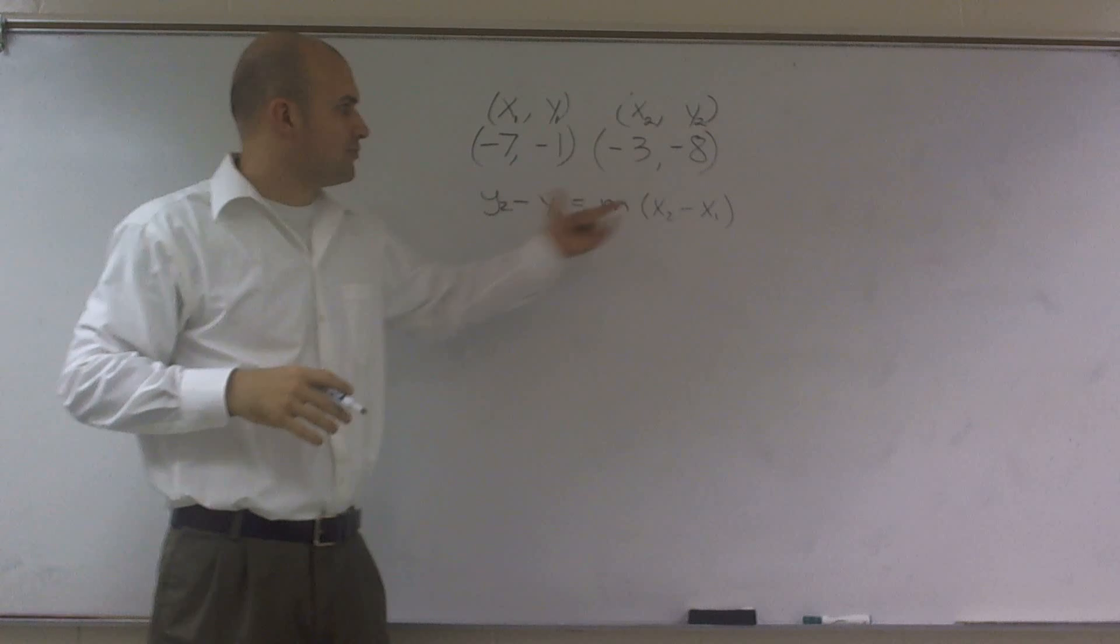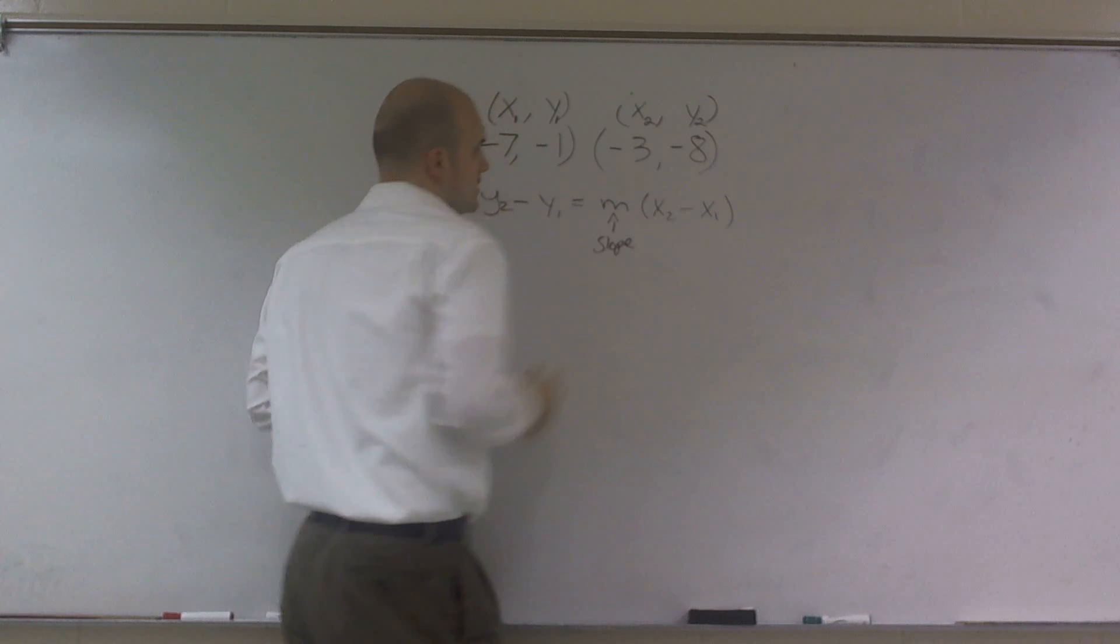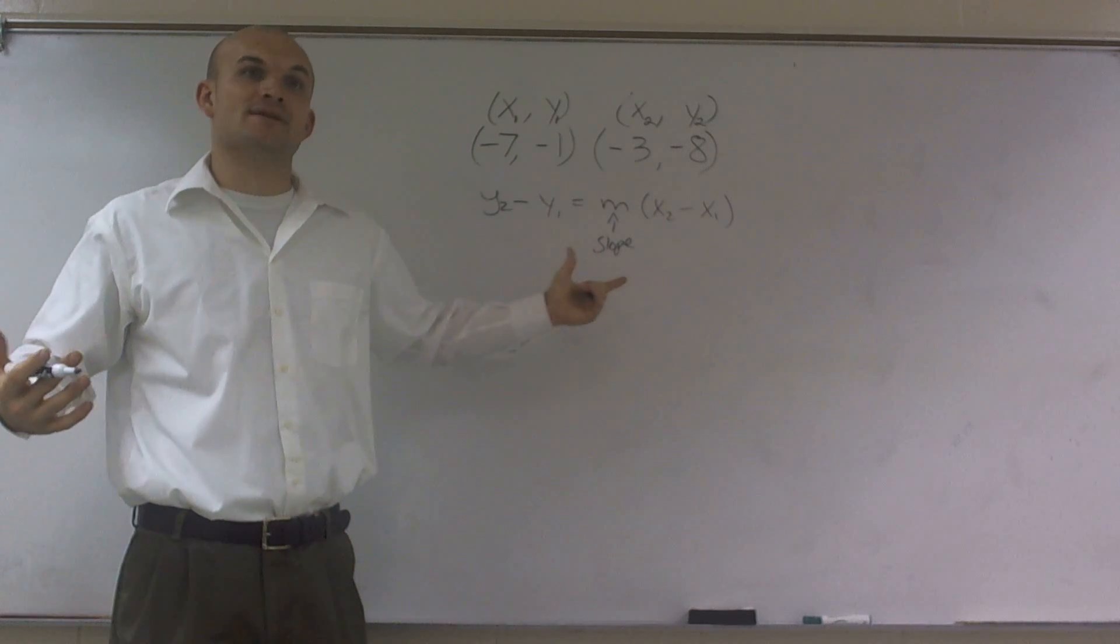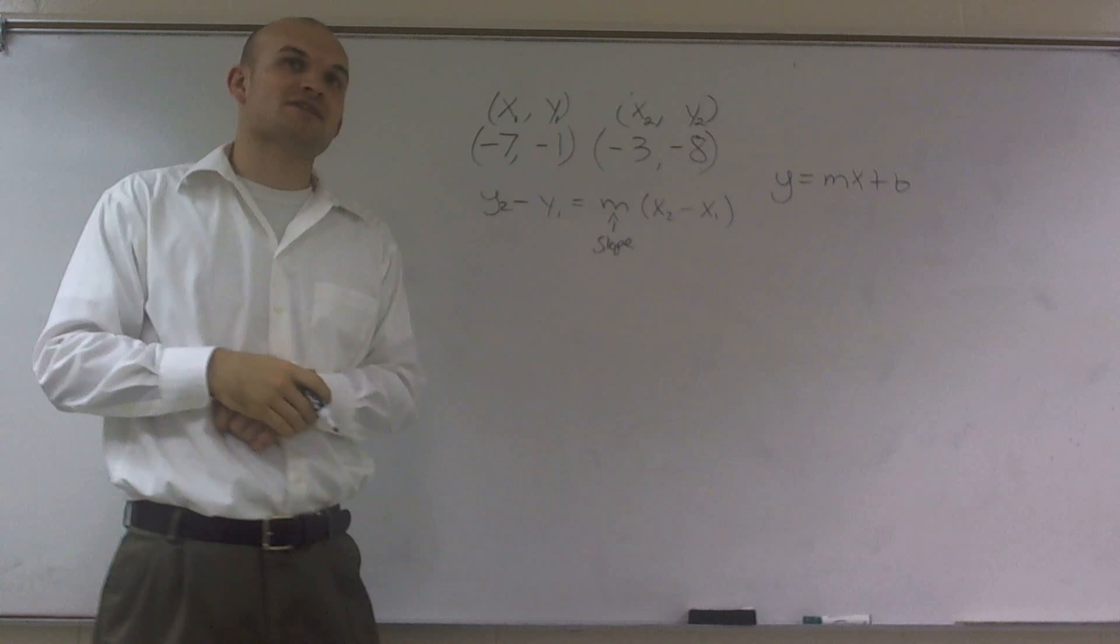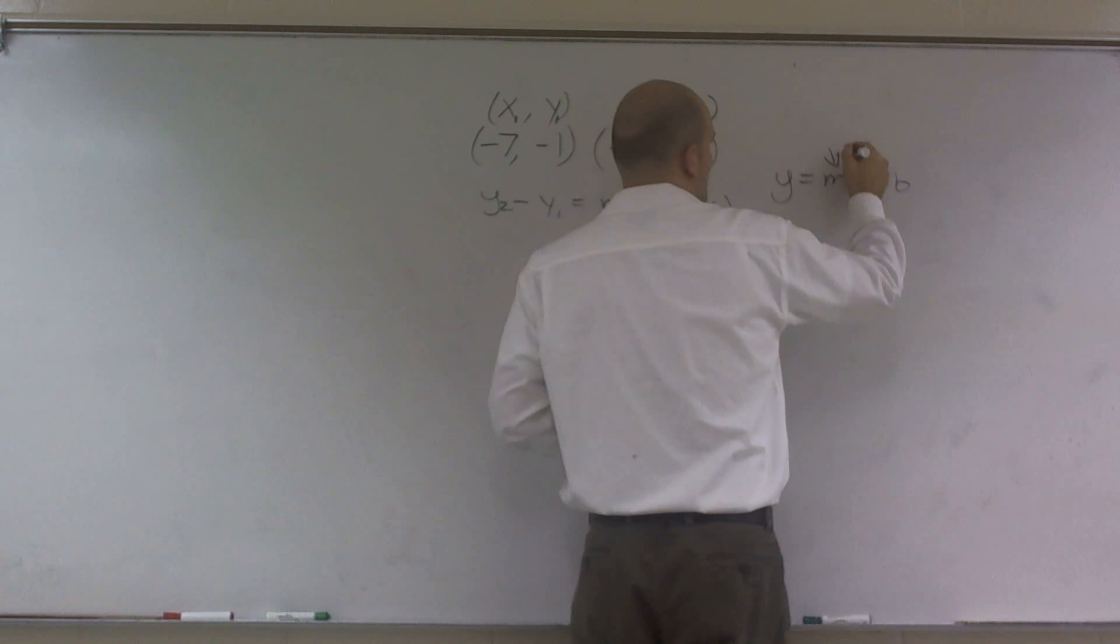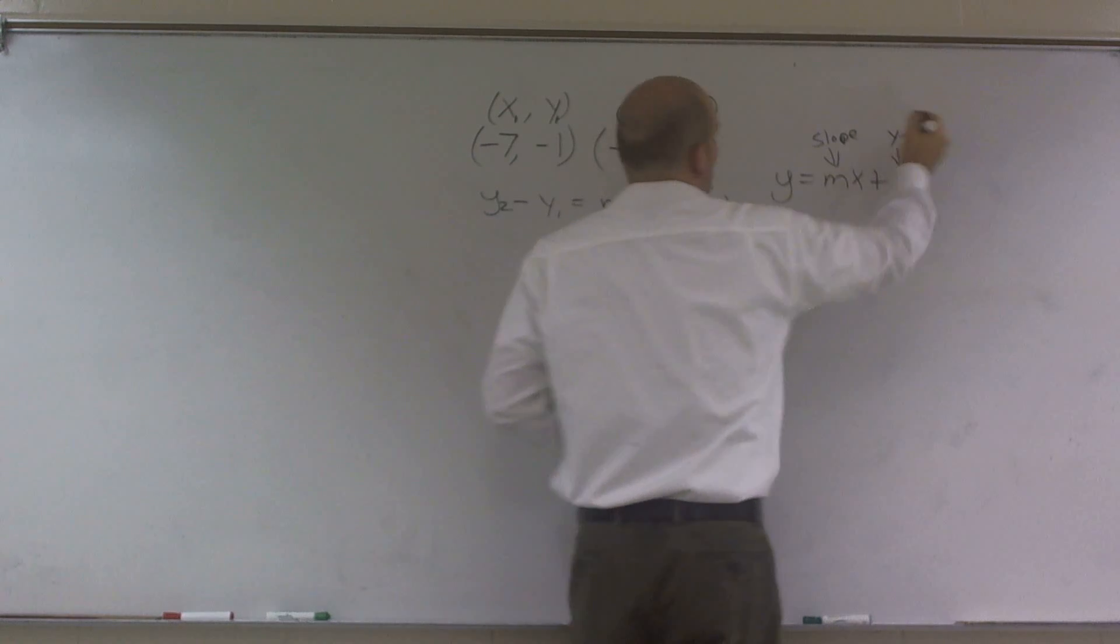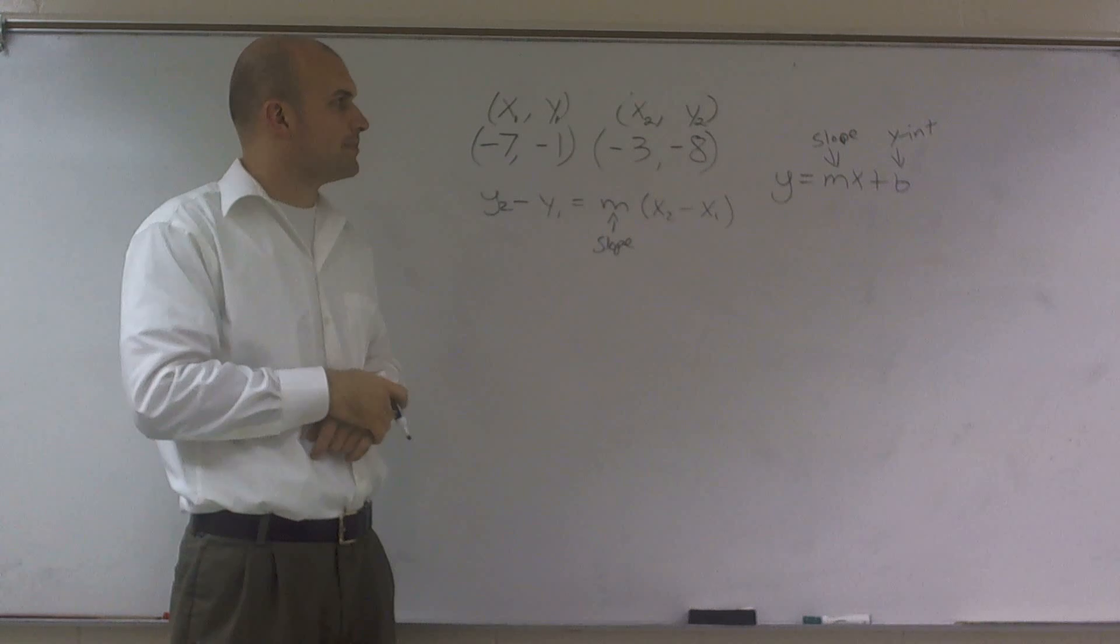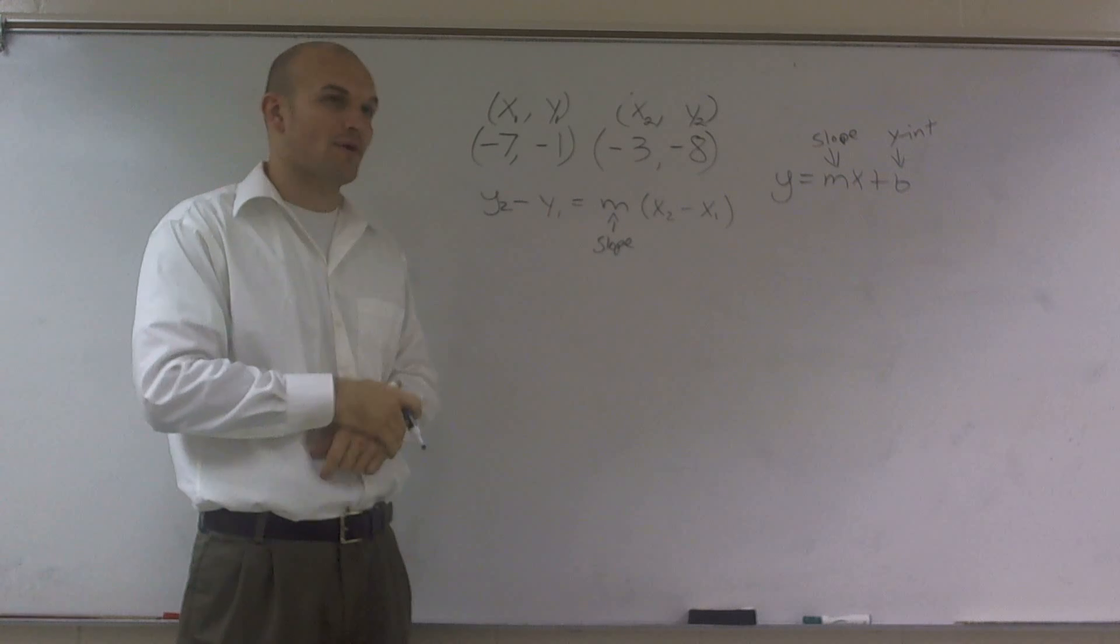And so what I'm going to do is I'm going to plug them in. Remember, m is our slope. So if I plug these two points in, what I can do is I can figure out what the slope is. And now remember, a linear equation can be written in the form of y equals mx plus b, where m is our slope and b is our y intercept. I think it'd be a lot easier to show you how to solve it with point slope form.